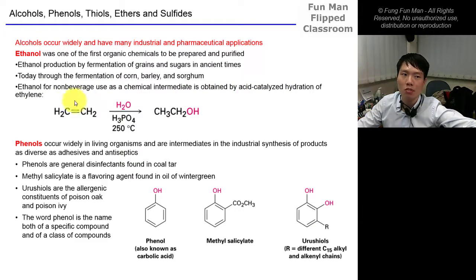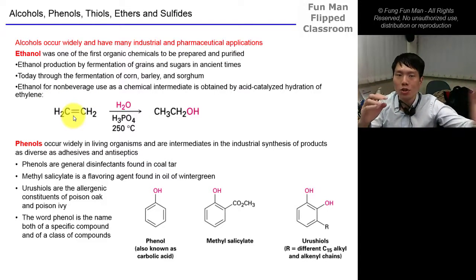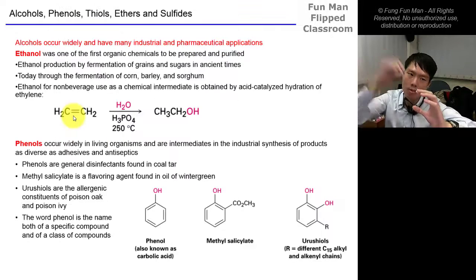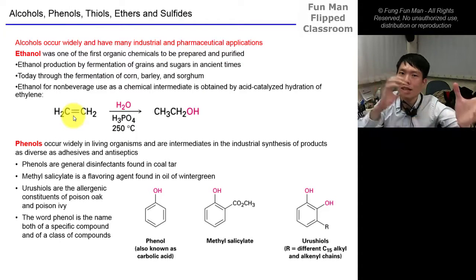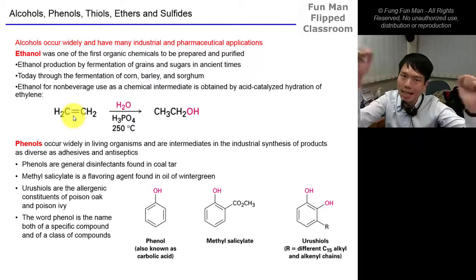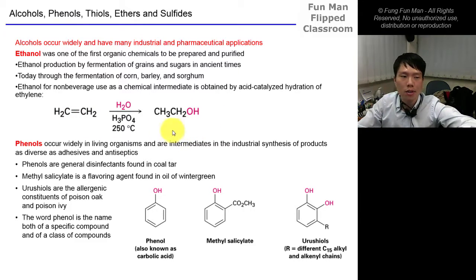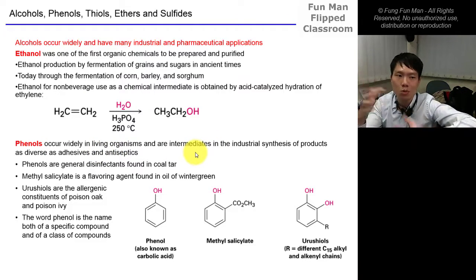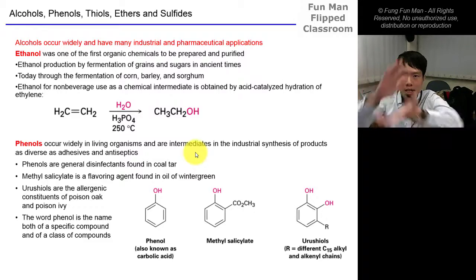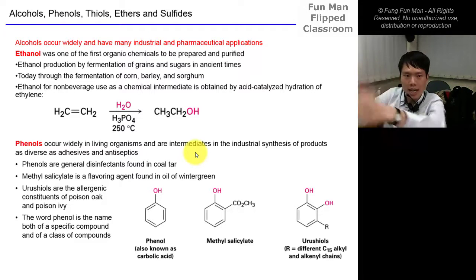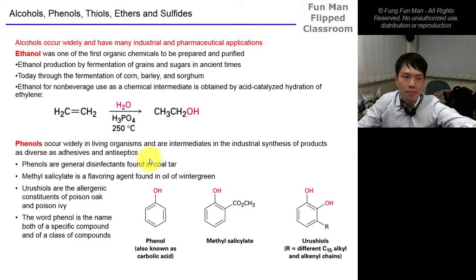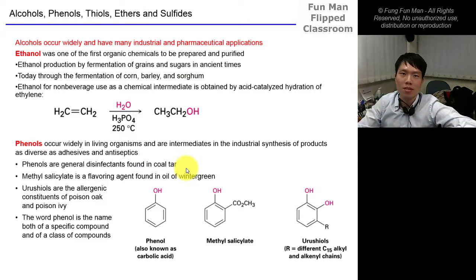Sorghum — for those who watch Korean dramas — is used to make sorghum ethanol in Korea. For non-beverage use, ethanol is used as a chemical intermediate, obtained from the acid-catalyzed hydration of ethylene. We pump in steam — not water, because water and alkene don't mix — steam being a gas that reacts to form an alcohol.